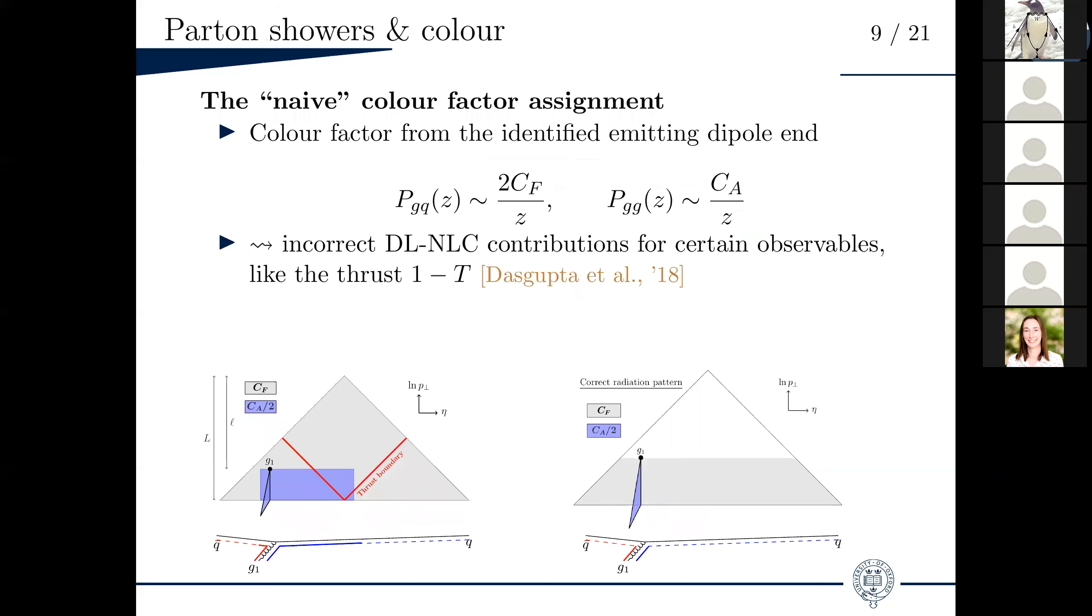Okay. So what's the issue with color then? Well, in typical showers, the color factor, either CF or CA, is basically put back by hand into the shower in the following way. One would look at the dipole end that is identified as the emitter. If it's a quark, you apply a factor CF to the emission rates. If it's a gluon, you apply a factor CA. This is very simple. But it was shown actually by some of my collaborators that this color factor assignment will lead to the wrong full color terms already at leading log level for certain observables like the thrust.